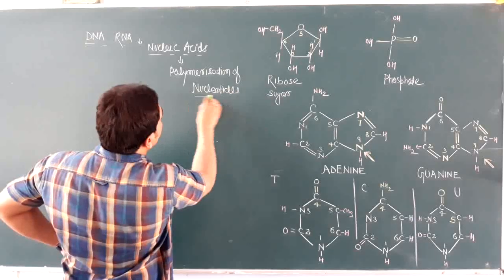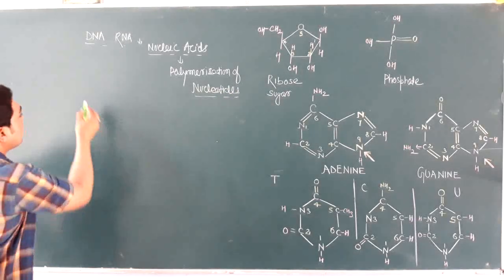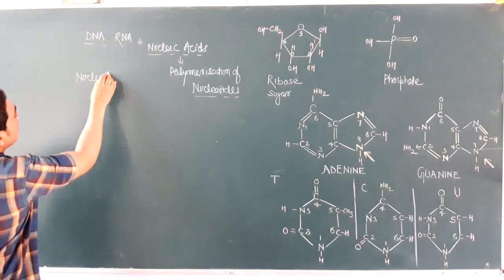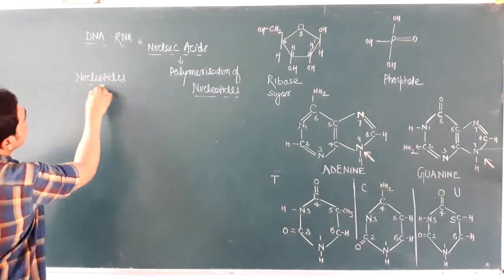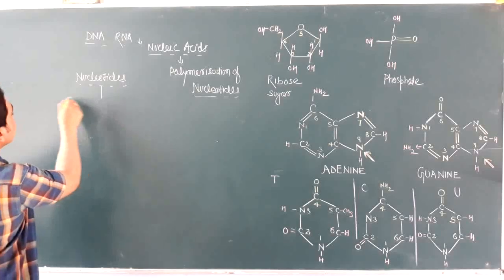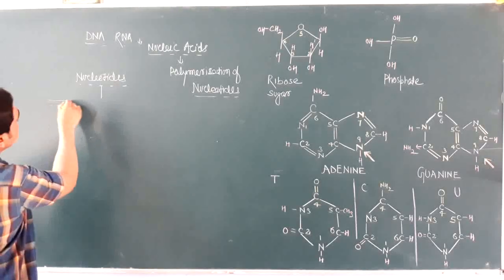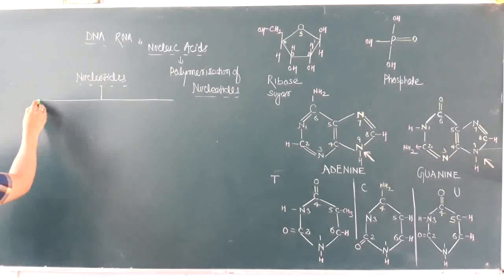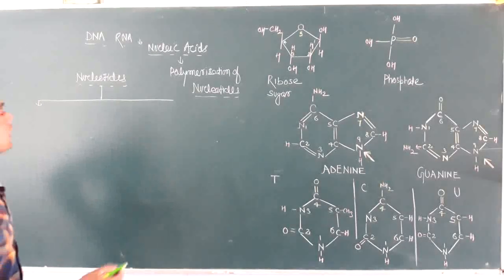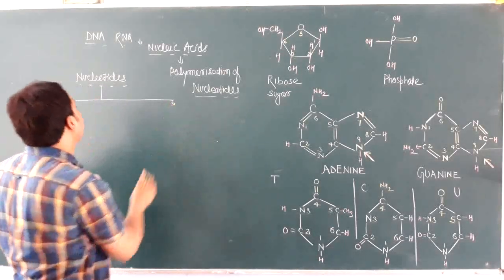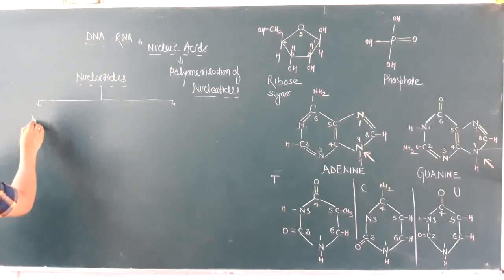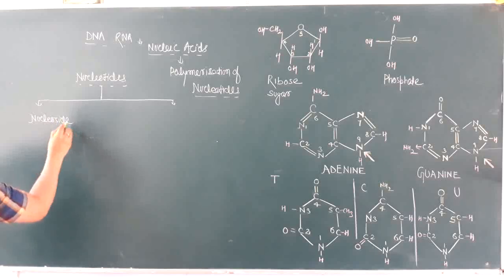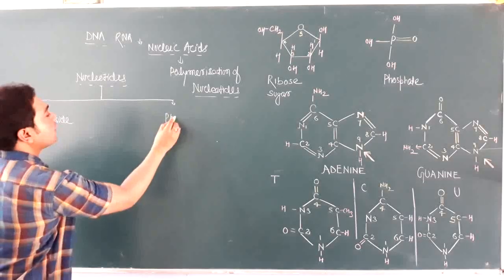What are nucleotides? First we are going to take nucleotides into account, and later we will discuss the structure of the various components associated with this genetic material. Nucleotides are formed of nucleosides and a phosphate group.